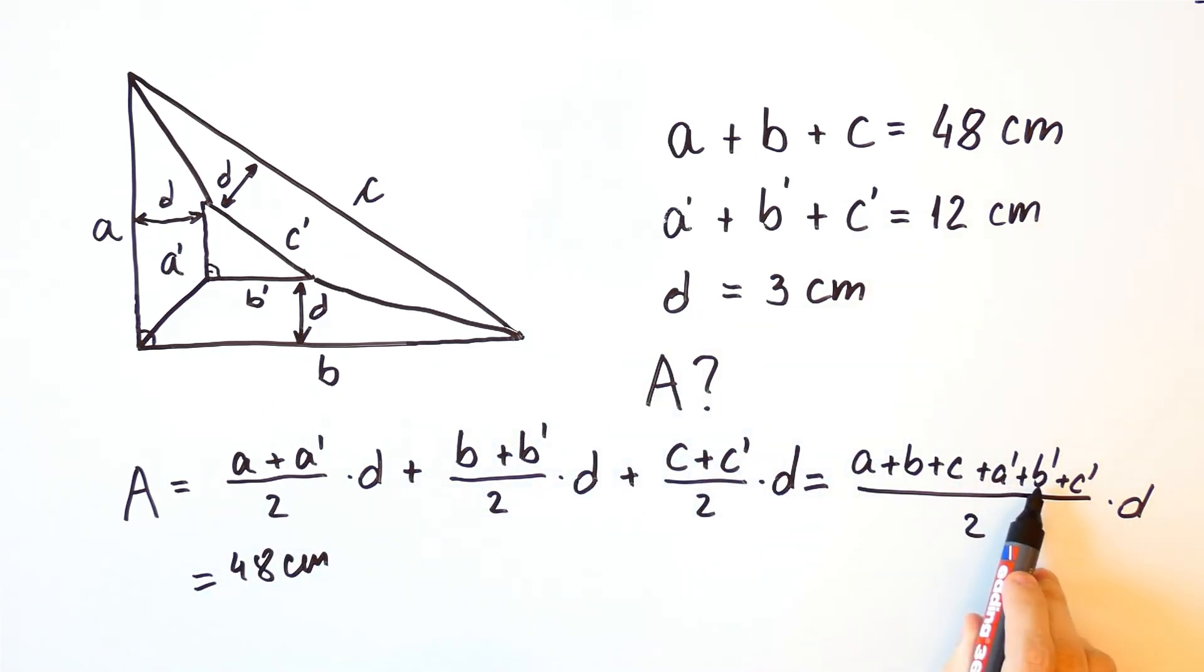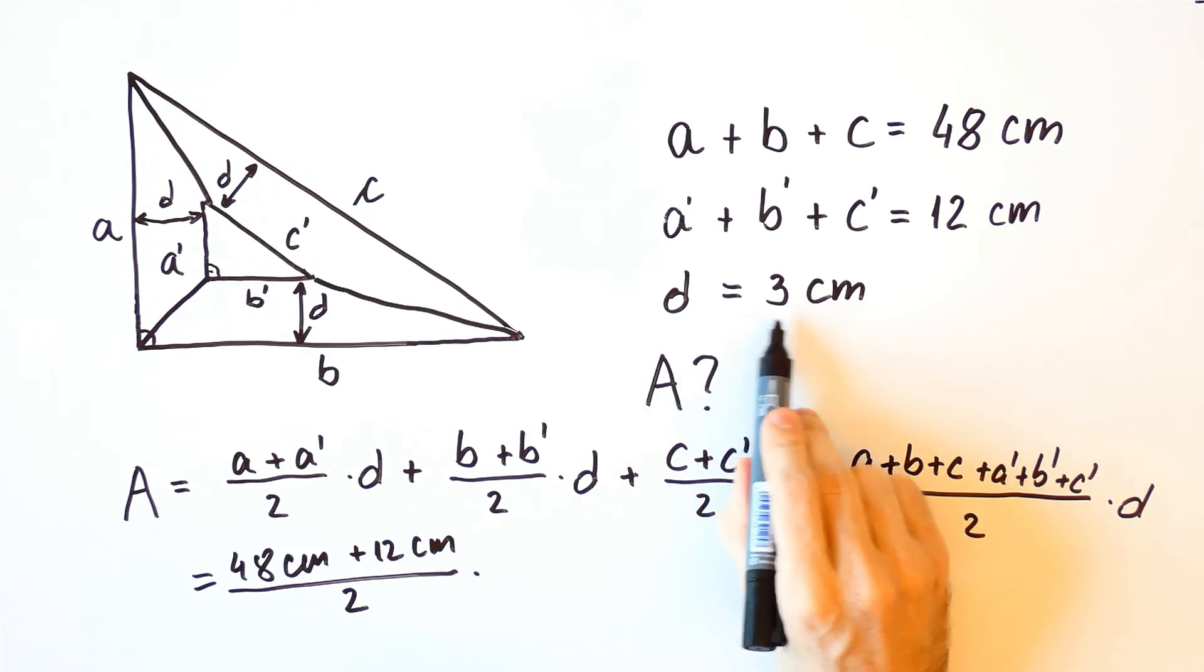A prime plus B prime plus C prime is 12 centimeters. And D is 3 centimeters.